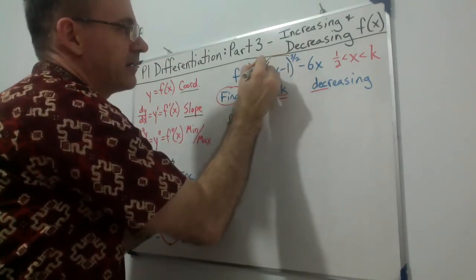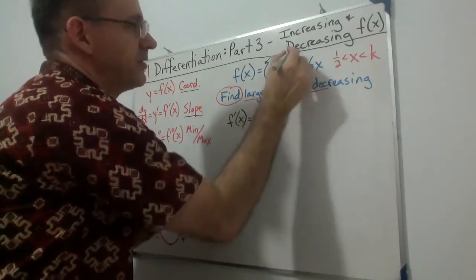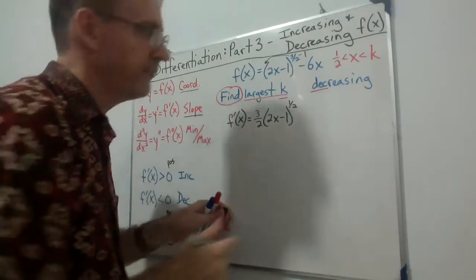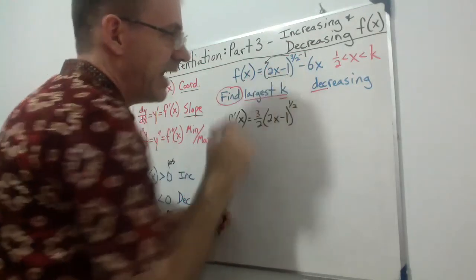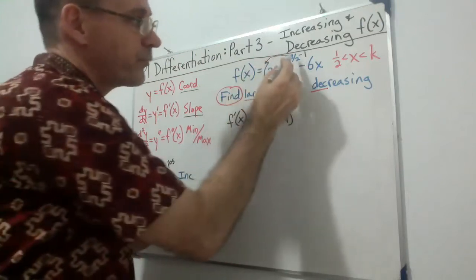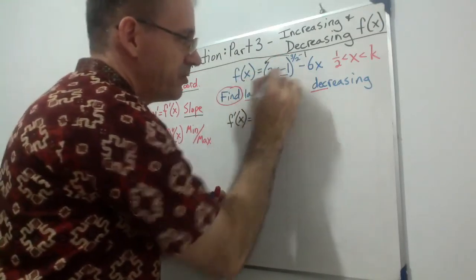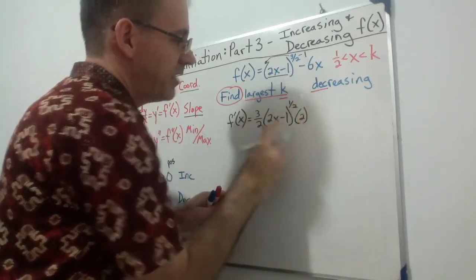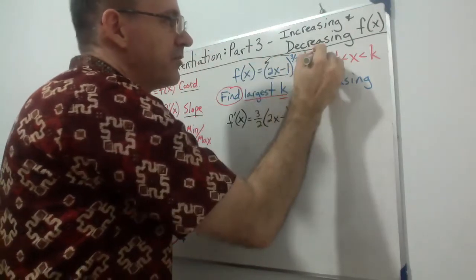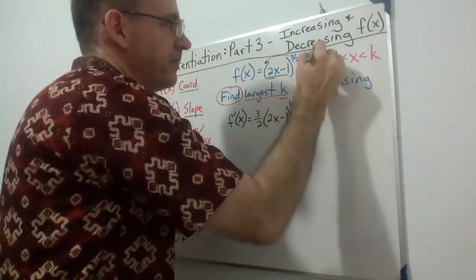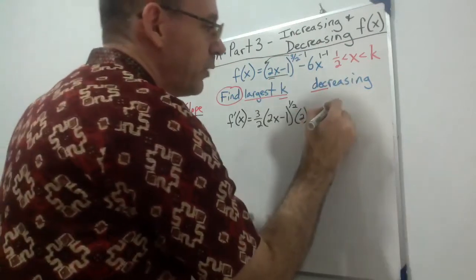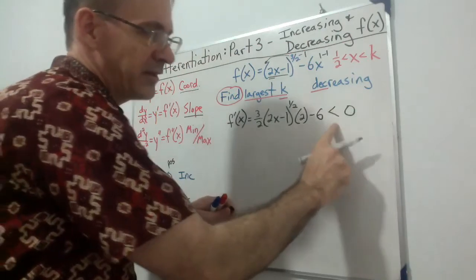Using the chain rule: multiply the exponent 3/2 to the front, subtract 1 leaving (2x − 1)^(1/2), and don't forget the derivative of the inside which is 2. So we get (3/2) · (2x − 1)^(1/2) · 2, minus 6. Since it's decreasing, we set f′(x) < 0.